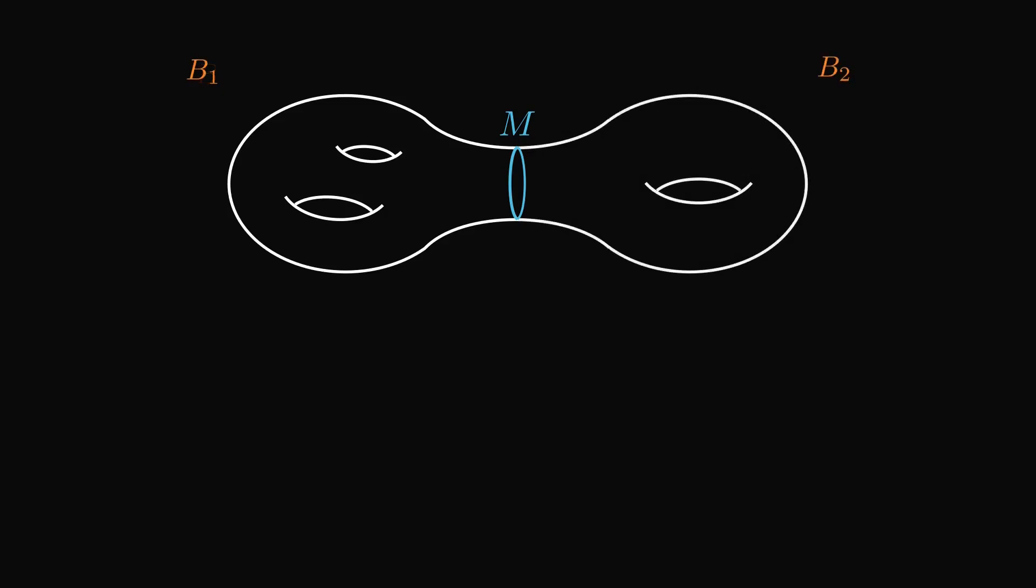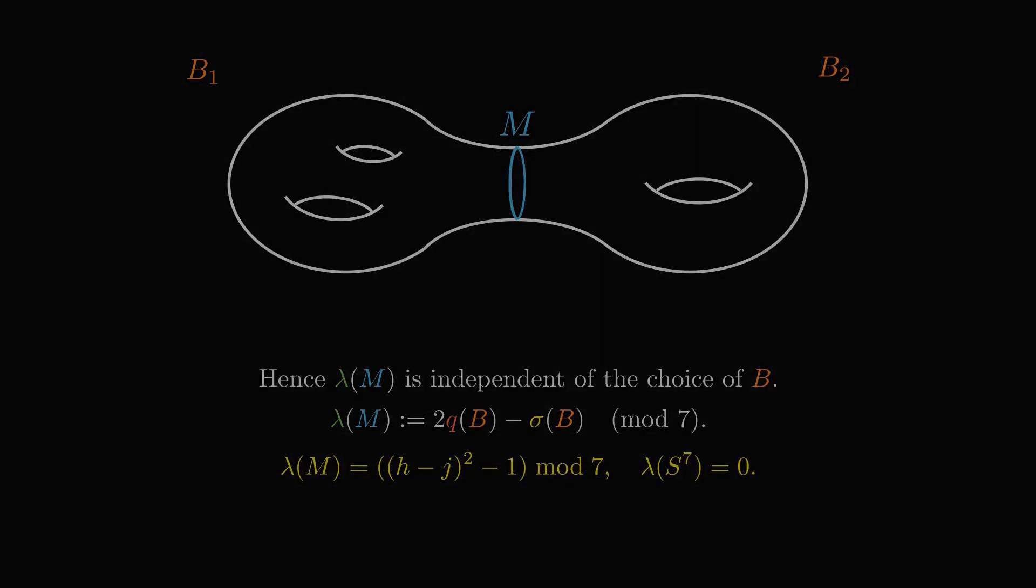Take two different 8-dimensional manifolds, B₁, B₂, with boundary M and glue them together along M. The signature theorem applied to these closed manifolds shows that a certain combination of Pontryagin class and the signature depends only on M. If lambda is 0, M(H,J) could be diffeomorphic to 7-sphere. But if it's not, then M has a totally different class of smooth structures.